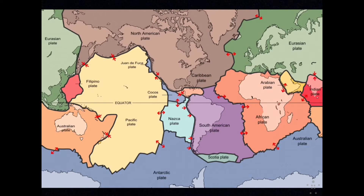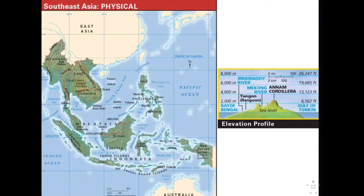Physical geography: peninsulas and islands. When the Eurasian, Philippine, and Indo-Australian plates collided millions of years ago, they formed the land masses known today as Southeast Asia. You can see those zones on this map. This movement created upheavals called cordilleras — parallel mountain ranges and plateaus — which extended into the Indochina Peninsula. You can see the Annam Cordilleras located on your physical geography map.